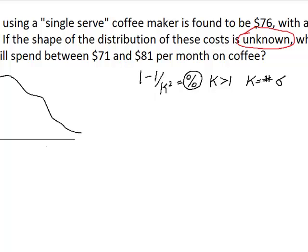So based on that, I'm going to go through and hopefully show you how this is going to work. What I want to know is what percentage of the households spend between $71 and $81 a month. The mean is $76.